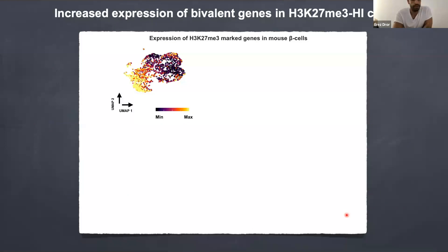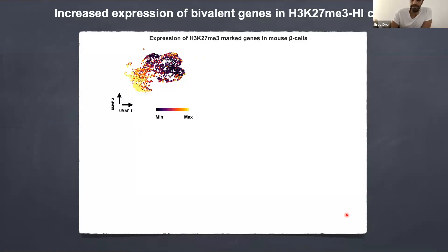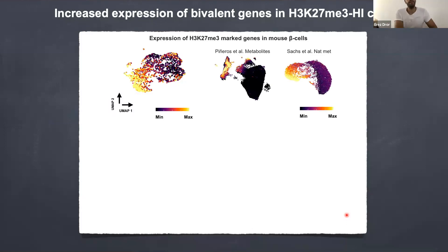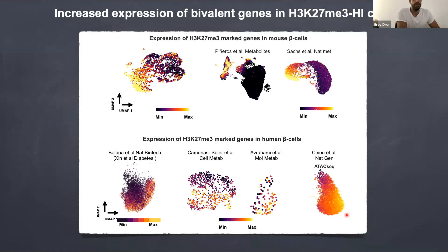In agreement with what we saw in the ChIP-seq — where we have de-silencing of what we believed to be silent genes — the cluster of high cells also has higher expression of genes typically silenced, which we refer to as bivalent genes marked with K27 trimethylation but also with an active mark. Upon release and reduction in K27 trimethylation levels, we have expression of these bivalent genes ready to be activated. We see this not only in our dataset, but in every other dataset in our meta-analysis in mice and also in humans. We always have this trajectory of K27 trimethylation-marked genes.